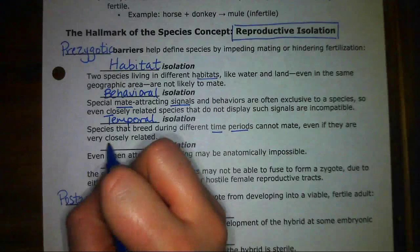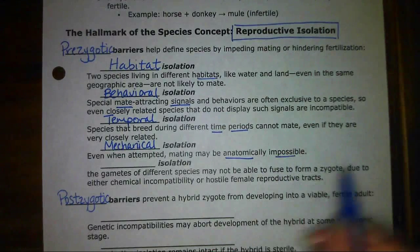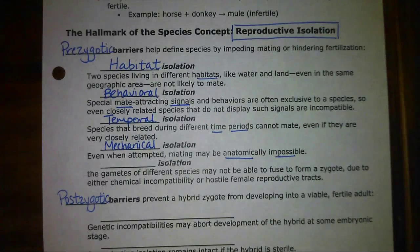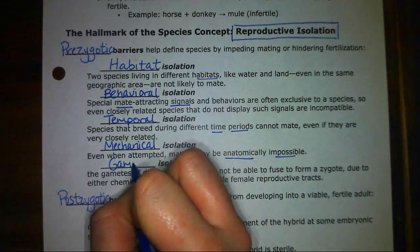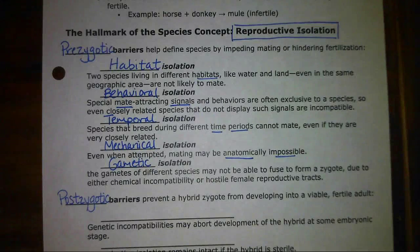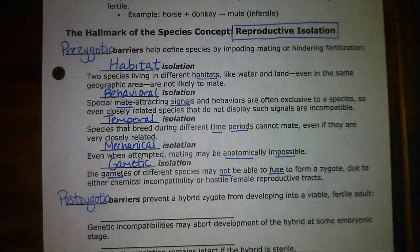The fourth prezygotic barrier is mechanical isolation, where the anatomy makes it impossible to reproduce — the reproductive structures don't fit together anatomically, so they cannot produce a zygote. The fifth is gametic isolation. Even if species share the same habitat, the same mating behaviors, reproduce at the same time, and the reproductive structures fit together, for some reason the gametes don't fuse — some sort of biochemical incompatibility prevents the gametes from actually fusing.